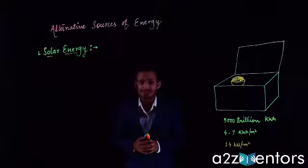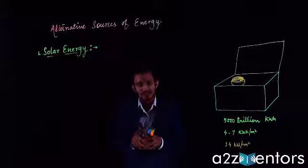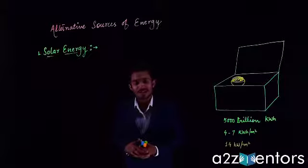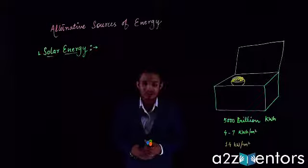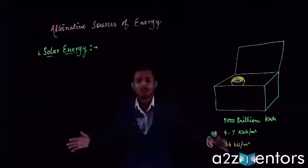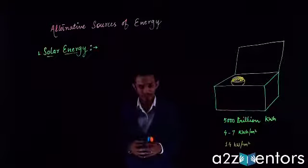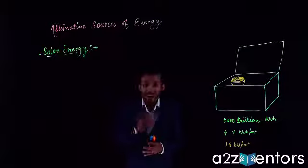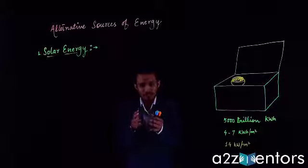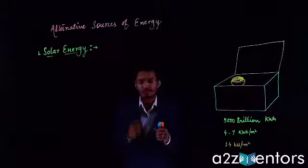The first non-conventional source is solar energy. We know that sunlight is a very important factor for life on this planet. Sunlight is required by plants — plants can only make their food in the presence of sunlight. If sunlight is not there, plants will not be able to make food, and then all other organisms that depend directly or indirectly on plants will also be affected. So solar energy is a very important source of energy and is essential for the sustenance of life on this planet.